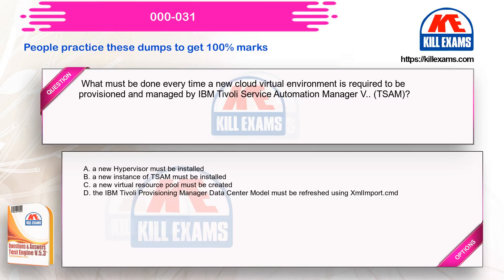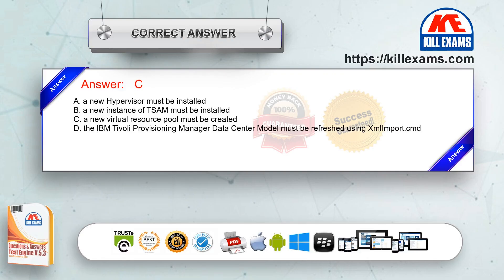What must be done every time a new cloud virtual environment is required to be provisioned and managed by IBM Tivoli Service Automation Manager (TSAM)? Option A: a new hypervisor must be installed. Option B: a new instance of TSAM must be installed. Option C: a new virtual resource pool must be created. Option D: the IBM Tivoli Provisioning Manager data center model must be refreshed using XML import. The correct answer is option C.